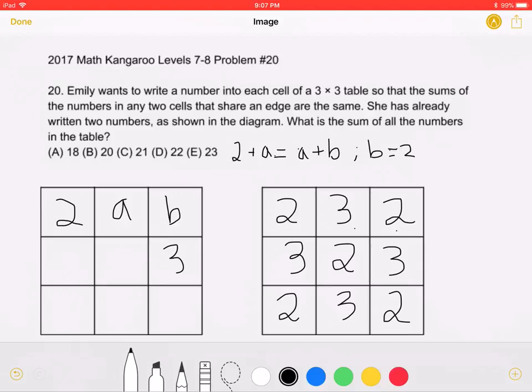Now, we must add the sum of all of these numbers. So, we have five 2's. So, we'll have 5 times 2, which equals 10, plus 4 times 3, as we have four 3's, and that is equal to 12. So, if we add 10 and 12 together, we will get 22, which is answer choice D.